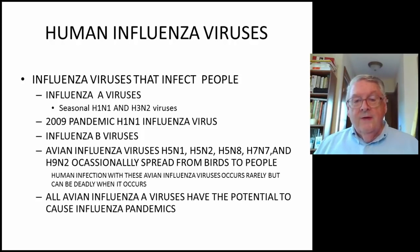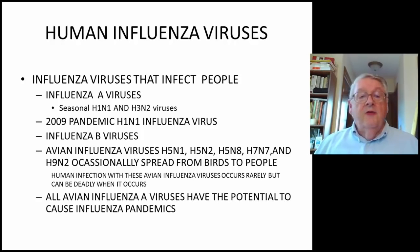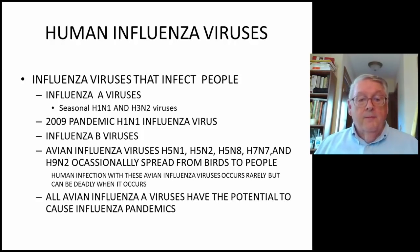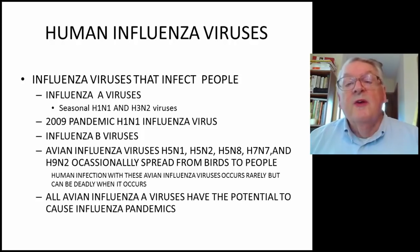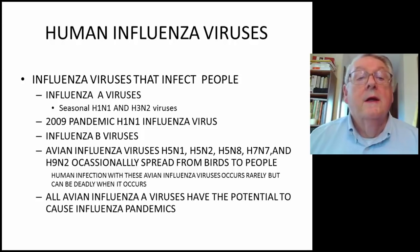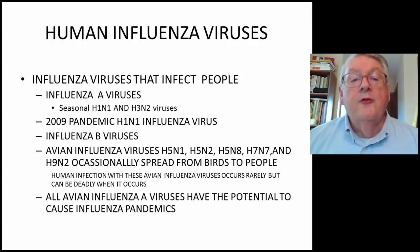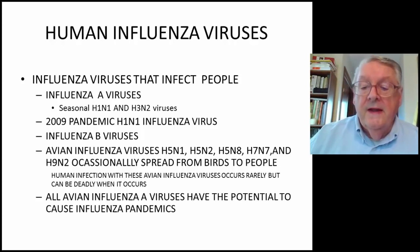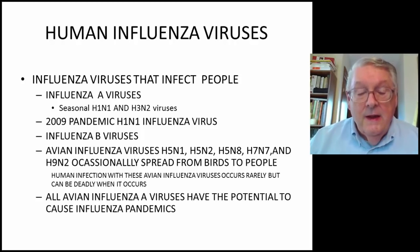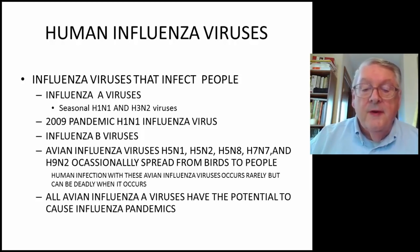The avian influenza viruses — H5N1, H5N2, H5N8, H7N7, and H9N2 — occasionally spread from birds to people. Human infection with these avian influenza viruses occurs rarely, but can be deadly when it does occur. All avian influenza A viruses have the potential to cause influenza pandemics. A pandemic is a worldwide epidemic.